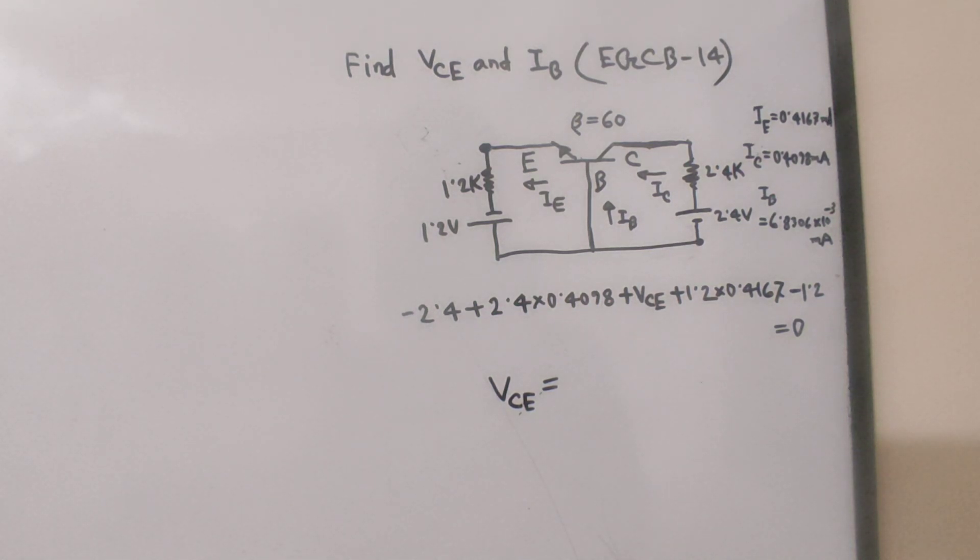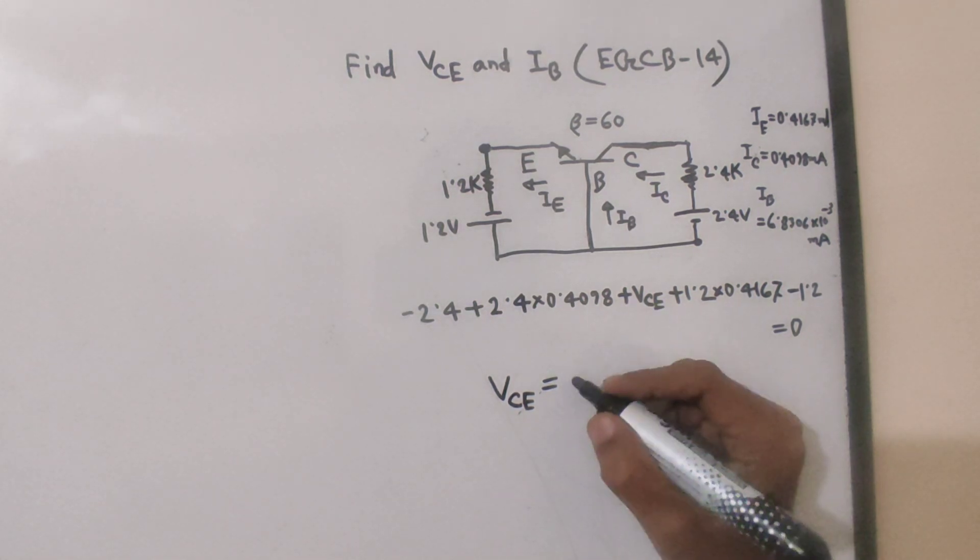For VCE: 2.4 plus 1.2 minus 2.4 into 0.4098 minus 1.2 into 0.4167. VCE equals 2.1164 volts.